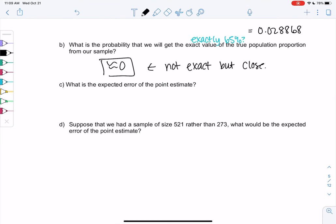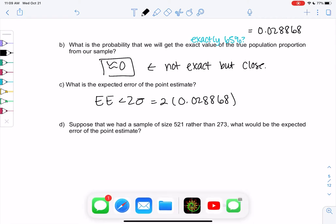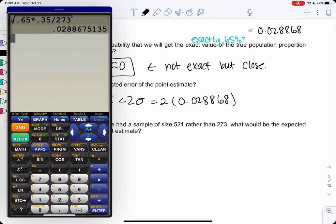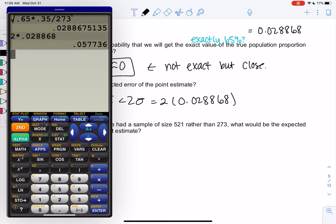What is the expected error of our point estimate? We learned expected error is within those two standard deviations that we've been talking about a lot. So we will do 2 times the standard deviation, 0.028868, and we get expected error of about 0.057736. So basically, plus or minus, when we say within, it could be a little over or under. So plus or minus 0.557% from that original value of 65.